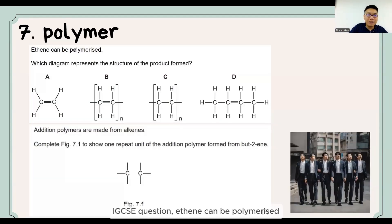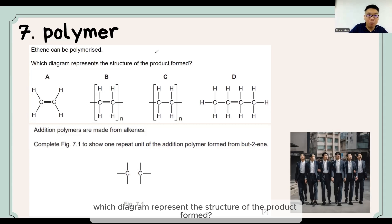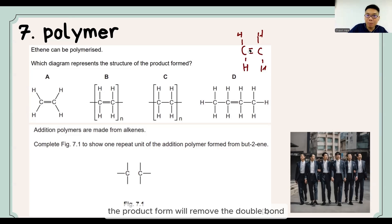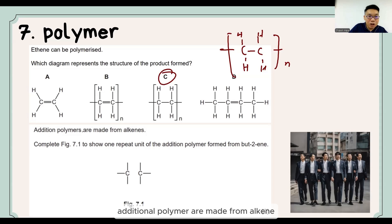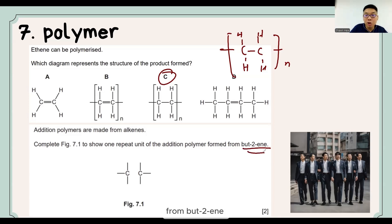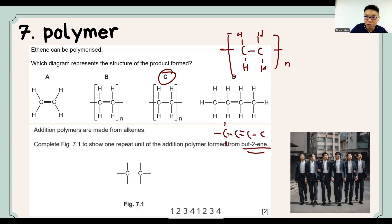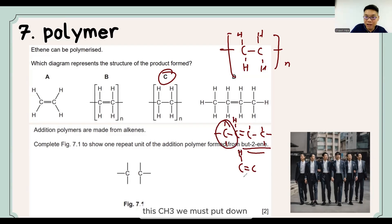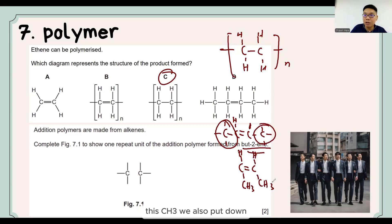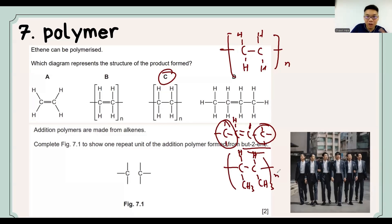Let's look at an IGCSE question. Ethene can be polymerized — which diagram represents the structure of the product formed? Ethene has a C=C double bond; the product removes the double bond and becomes single bonds joining the repeat units. For the next question: this figure shows one repeat unit of an addition polymer from but-1-ene. But-1-ene has 4 carbons with the double bond on C1. We identify C=C in the middle, put H on top and CH3 on the bottom. When joined to form the polymer, we remove the double bond and attach left and right.